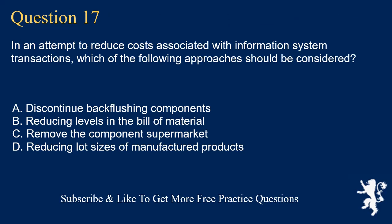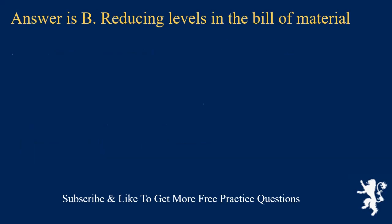Question 17. In an attempt to reduce costs associated with information system transactions, which of the following approaches should be considered? A. Discontinue backflushing components. B. Reducing levels in the bill of material. C. Remove the component supermarket. D. Reducing lot sizes of manufactured products. Answer is B. Reducing levels in the bill of material.